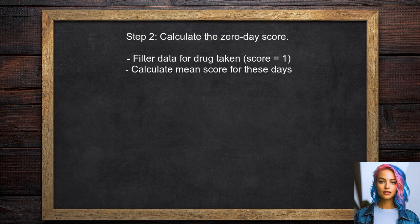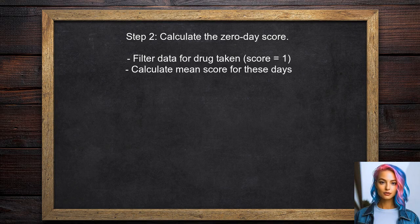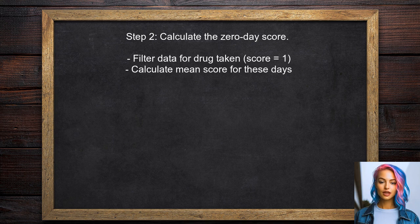Next, the user should calculate the mean score for the days when a drug was taken, referred to as the zero-day score. This involves filtering the data for each ID where the drug score is 1.